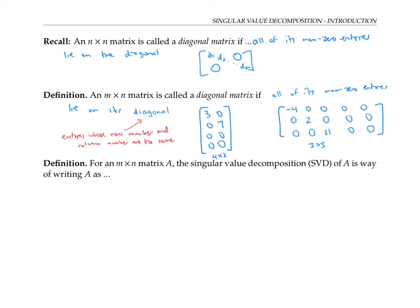For an m by n matrix A, the singular value decomposition (abbreviated SVD) of A is a way of writing A as a product of a matrix U, a matrix Σ, and a matrix V transpose, where Σ is an m by n diagonal matrix, V is an n by n orthogonal matrix, and U is an m by m orthogonal matrix.